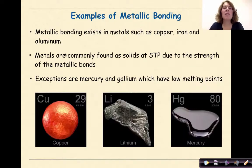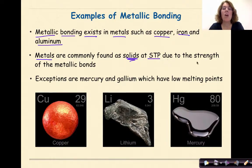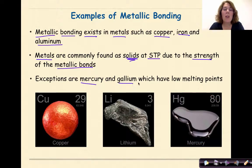Some examples of metallic bonding: metallic bonding exists in metals such as copper, iron, and aluminum. Metals are commonly found as solids at standard temperature and pressure, otherwise known as STP, due to the strength of the metallic bonds. The exceptions to these are mercury, which we can see right here, which is a liquid at room temperature, and gallium, which have extremely low melting points.